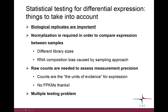The counts we have for each gene in each sample need to be normalized, because the library size may be different for different samples, meaning the total number of reads is different. There is also another thing called RNA composition bias, which I will explain.